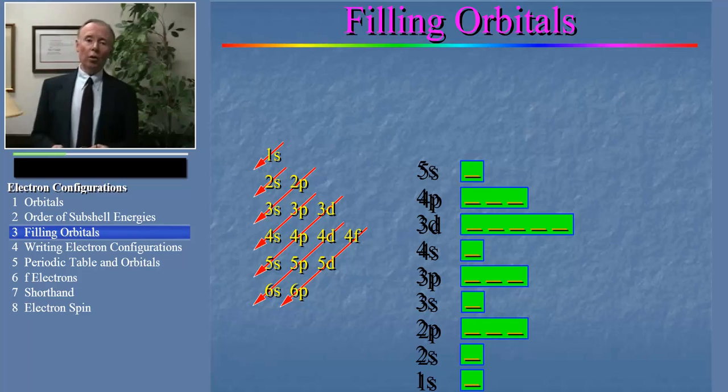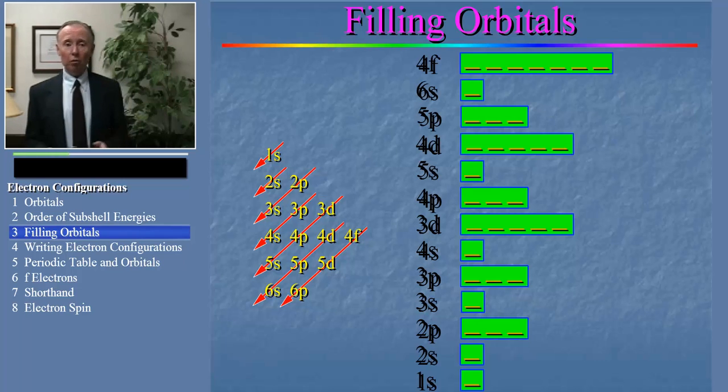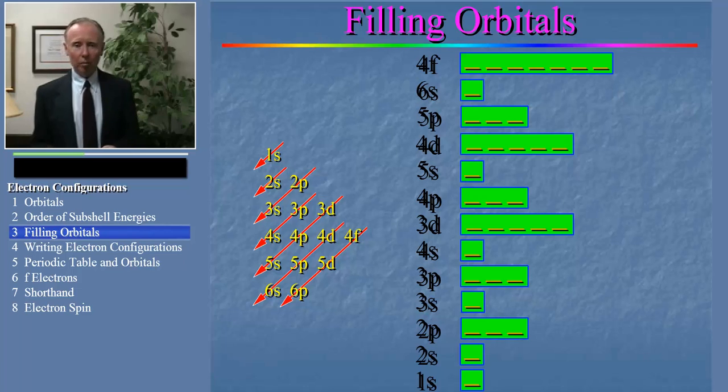So let's draw a chart showing the ordering of the subshells. Now, on this chart we show the order of energies, but not the actual values. If we did the latter, all the subshells towards the top would be so scrunched together they'd be unreadable. And that's not helpful.